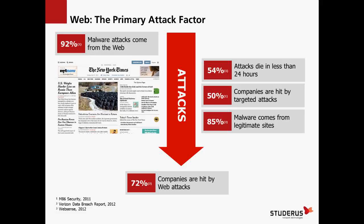Bis vor etwa fünf Jahren waren vor allem E-Mail-Attachments – Viren und Würmer – die hauptgefährliche Bedrohung im Internet. Das hat sich stark gewandelt, obwohl aktuell mit Kryptoviren das wieder etwas zugenommen hat. Ansonsten ist vor allem der Webzugriff die eigentliche Gefahr geworden, weil man das täglich braucht und es viele Webserver gibt, die nicht auf dem aktuellsten Stand sind.